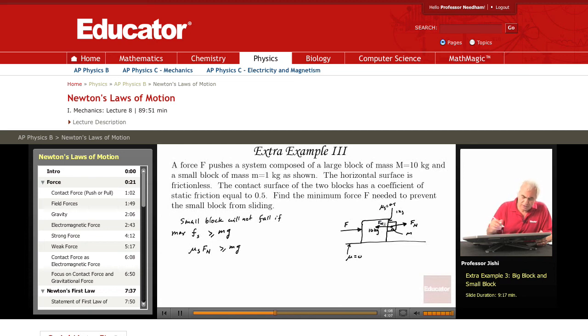For the big block, the net force acting is F, the applied force, minus F_n because F_n is in the opposite direction. And this by Newton's law is the mass of the big block times A.